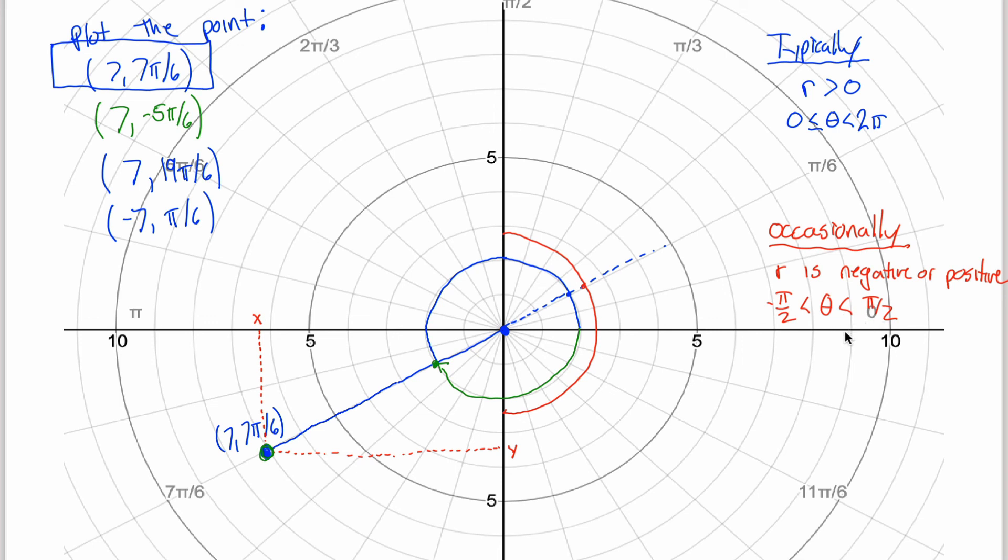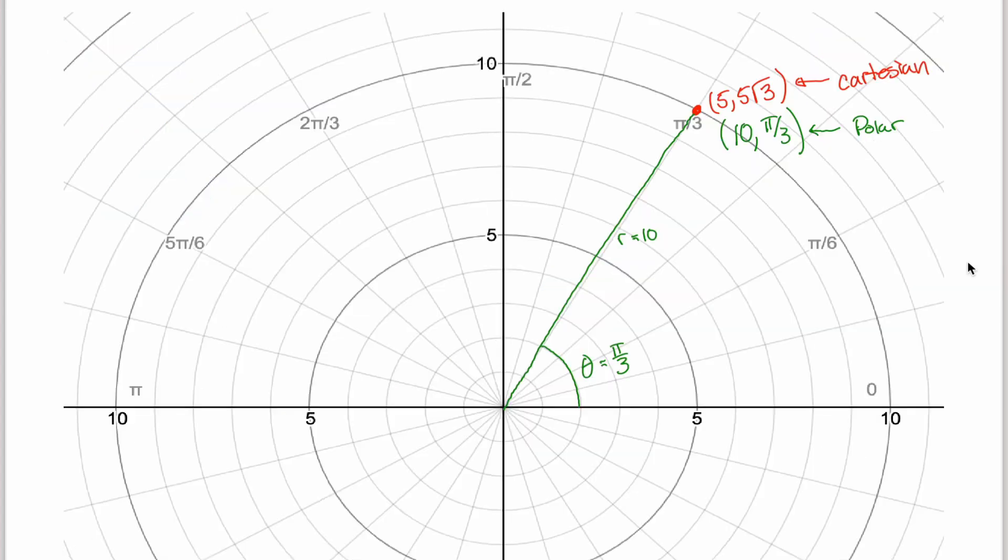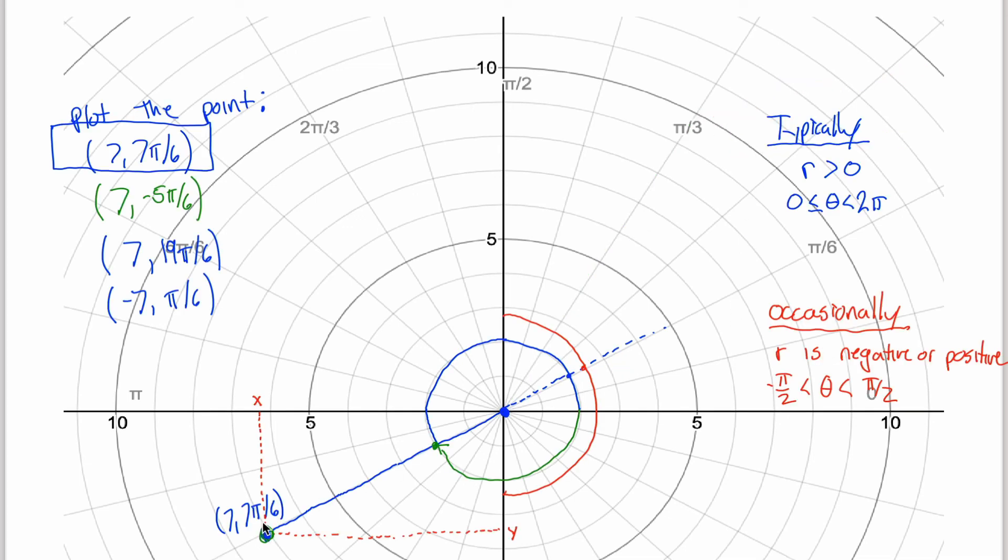But these are all subtle little topics that we don't really need to worry about for this introduction video. For this introduction video, if you're able to see how this point that we used to refer to with its Cartesian coordinates of 5 and 5 root 3 can now be referred to with polar coordinates of 10 and pi over 3, that's great. And if you can also see how any point really has multiple polar representations, that's all you really need for now. And we can worry about the little subtleties of which representation we want to choose later on.